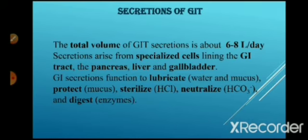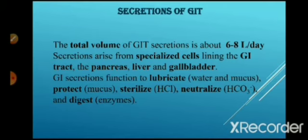The total volume of GIT secretions is about 6 to 8 liters per day. GIT secretions arise from specialized cells lining the GI tract, the pancreas, liver and gall bladder.